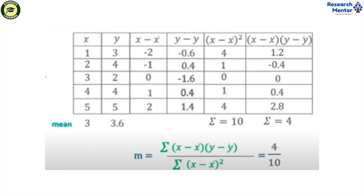Now the value of x minus x̄: the first value is minus 2, because the mean of x is 3 and the value of x is 1, then 1 minus 3 equals minus 2. Similarly, the second value is minus 1, next is 0, next is 1, next is 2.